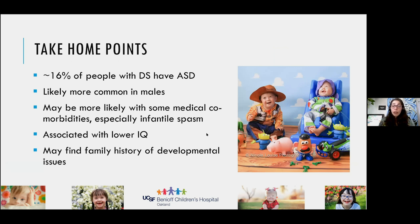Some take-home points on epidemiology: around 16% of people with Down syndrome have autism — the opposite of uncommon. It is likely more common in males, may be more likely with some medical comorbidities especially infantile spasms, seems associated with lower IQs on testing, and you may find a family history of developmental issues.